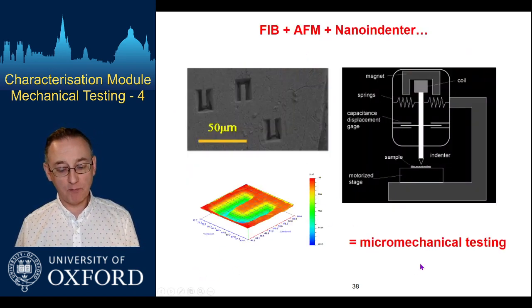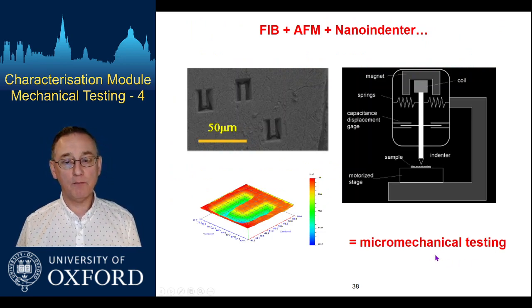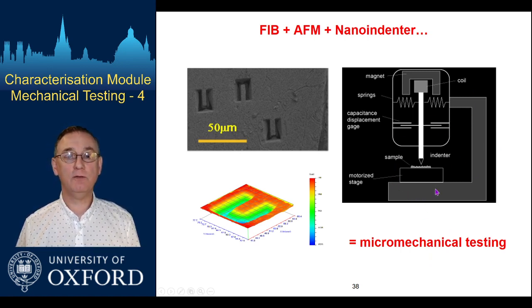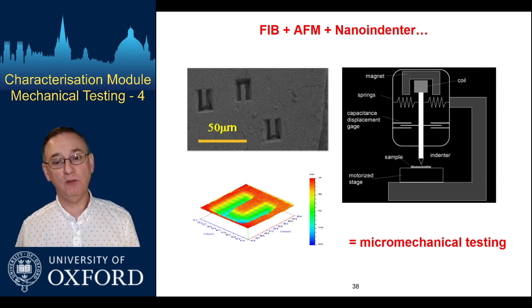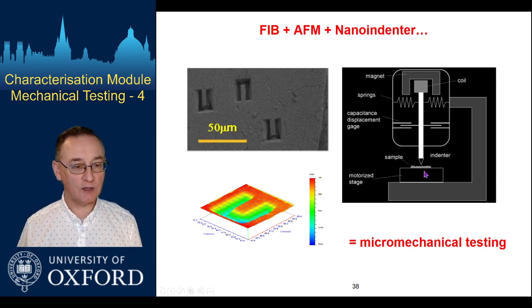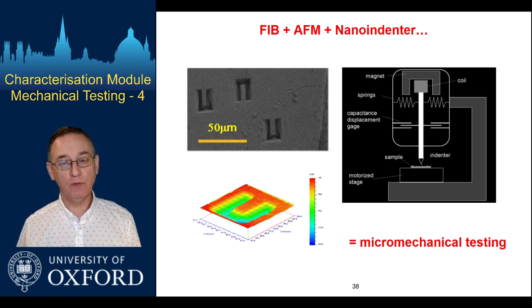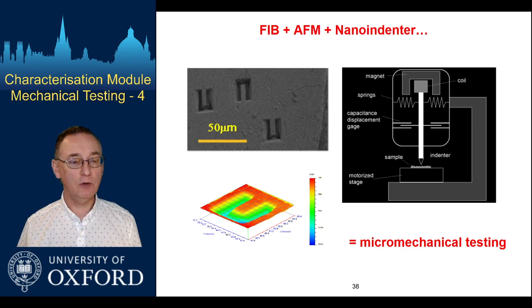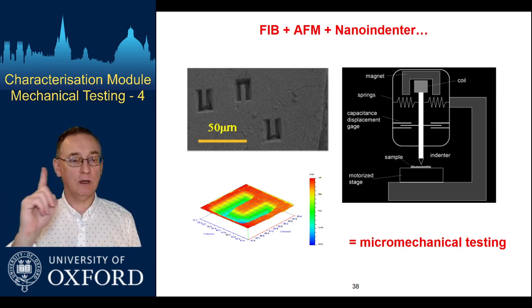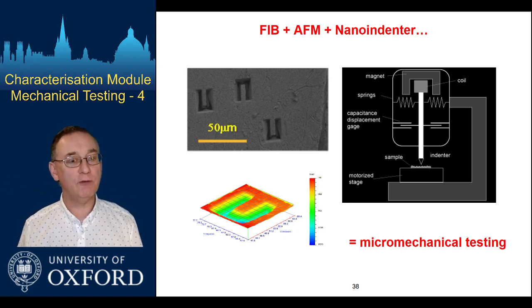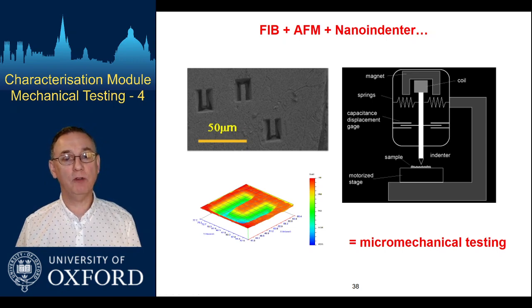The basis for this was having a nano indenter available to us. One of the problems with interpreting data from a nano indenter is that the stress state in the material is quite complicated. It varies with position out from the center of the indent crater and varies with angle around the indent, because there's compression radially and tension in the hoop directions. If you do that within a single crystal, the stresses are quite different relative to the crystal axis, so it can be quite complicated to interpret.